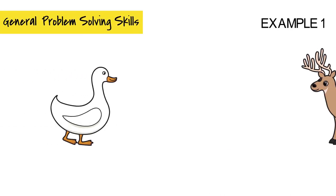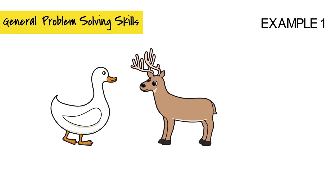Example 1, there is one duck and one moose. How many feet do they have all together? The answer is 6.